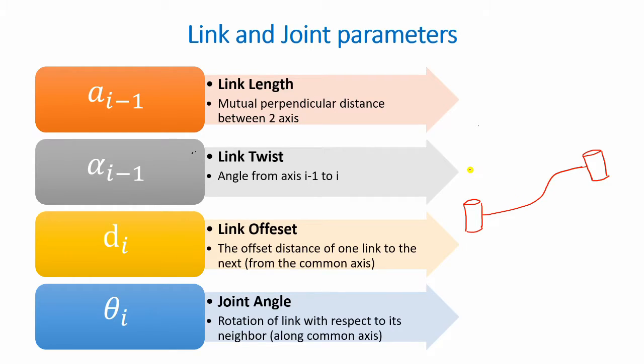Now each of these joints would have their joint axis. Alright, so the first value is our a i-1, which is the link length. For this, it would be the length of the common perpendicular between both these two axes. So that would be your a i-1.